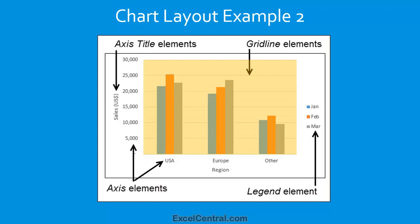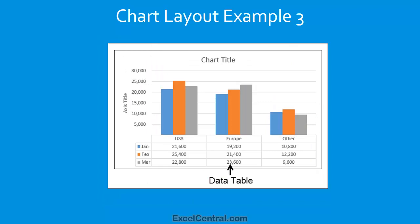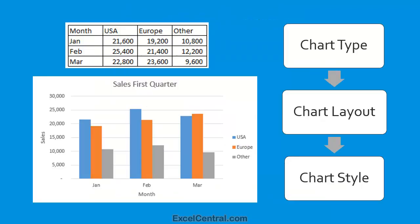Let's move on now to a third example that illustrates the Data Table Element. The Data Table Element shows you the source data that the chart is based upon. So you should now be clear upon what a Chart Layout is: it's a group of elements that appear on a chart, but it has nothing to do with the Chart Type or the Chart Style. Now that we're clear on what a Chart Layout is, we're ready to progress to the lesson.